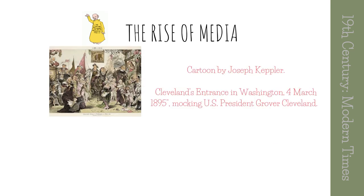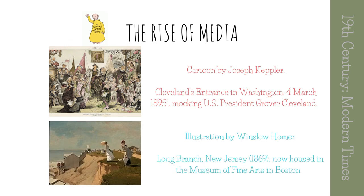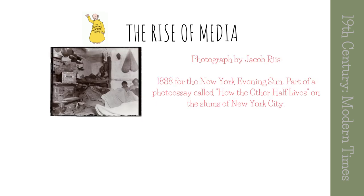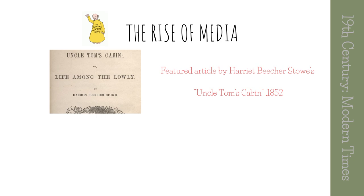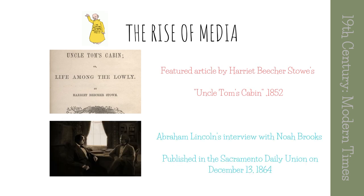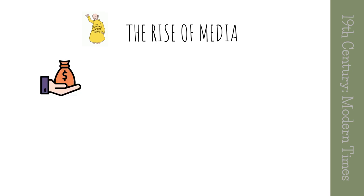New genres of journalism were developed in the 19th century to meet the needs of a new kind of audience — the mass audience — using genres like cartoons, illustrations, photos, columns, featured articles, and interviews. These newspapers were more visually appealing and sensational than the old pamphlets, which helped make them more interesting and engaging.